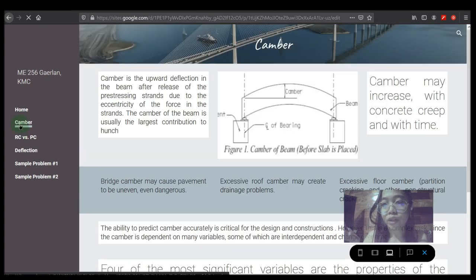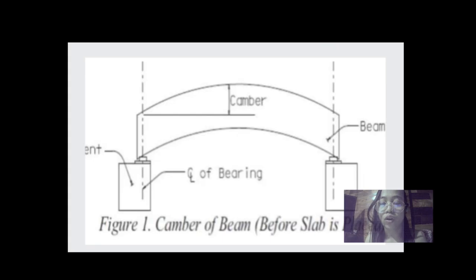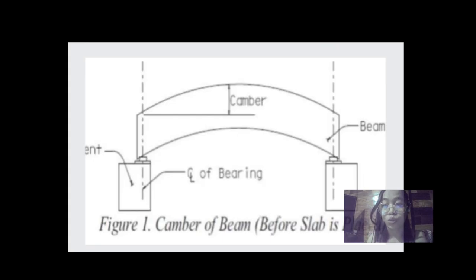Camber is the upward deflection in the beam after release of the prestressing strands due to the eccentricity of the force in the strands. This camber is reduced by the downward deflection of the girder due to the girder's self-weight.